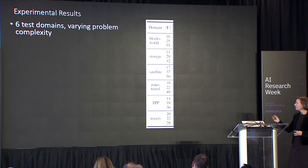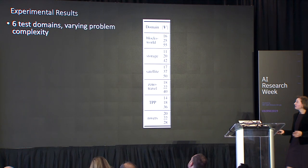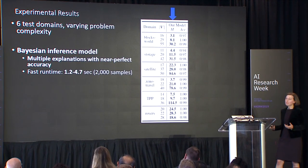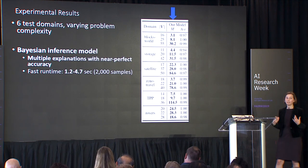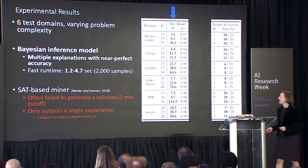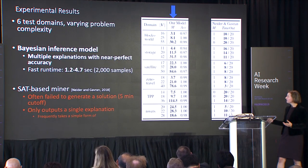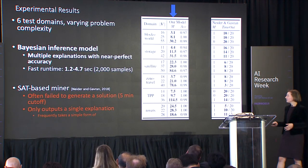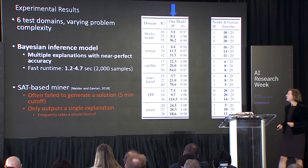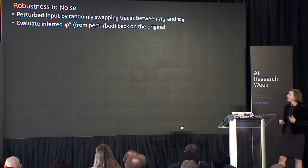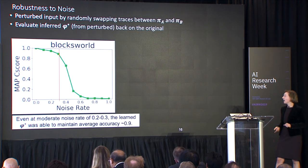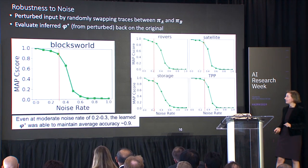We tested this work in domains of the automated planning and scheduling community — International Planning Competition domains of various sizes. Our model infers multiple contrastive explanations and identifies the true ground truth explanation with very high accuracy in seconds of runtime. Prior work that generates one solution often either fails to generate a solution in the specified time or outputs a single explanation that may not correspond to a human's mental model for understanding system behavior. Being Bayesian, it provides substantial robustness to noise, maintaining very high accuracies even with moderate noise in these domains.